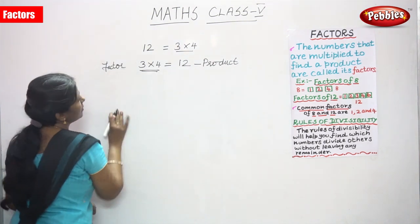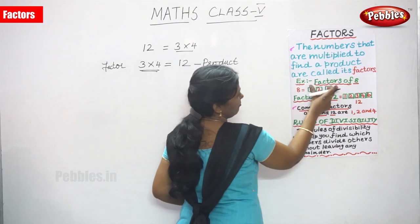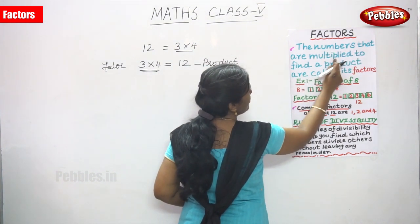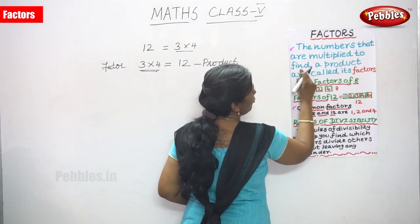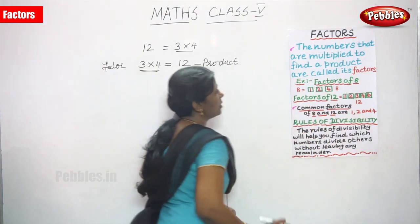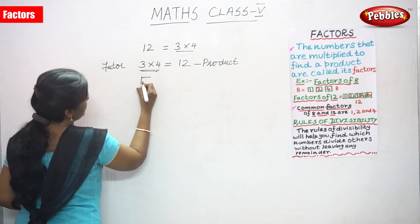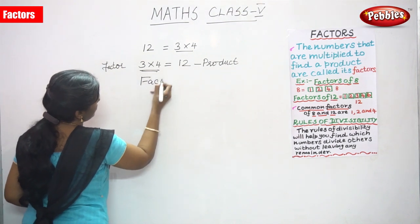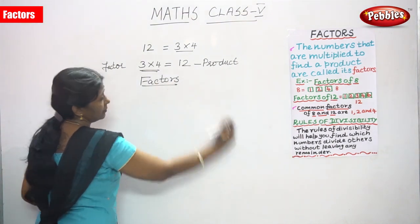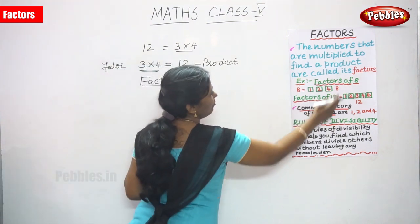Factors. That is what is explained in the definition: the numbers that are multiplied to find a product are called factors. So let's start. The chapter is Factors. For example, factors of 8.